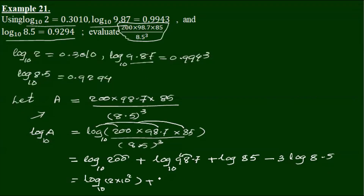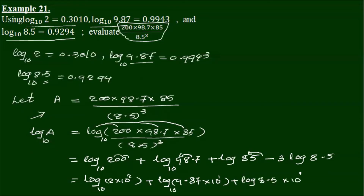So we have log 9.87 into 10 power 1 base 10, and we have to get 8.5. So we have log 8.5 into 10 power 1 base 10, and we have log 8.5 into log 8.5.